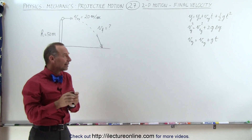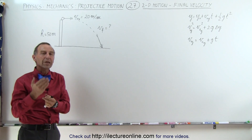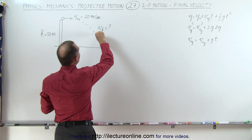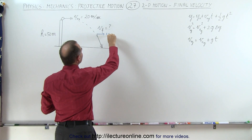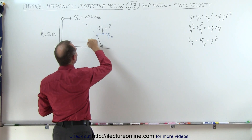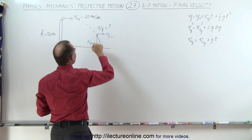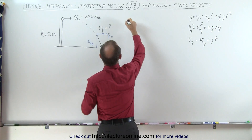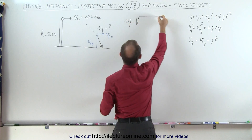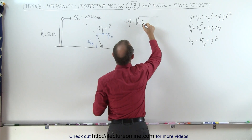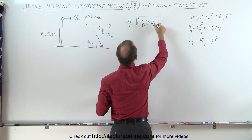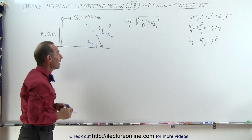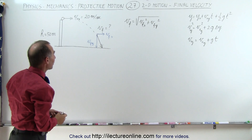The difficulty is that velocity is a vector quantity and has both an x and a y component. That means we need to find the final x component when it lands, v_final_x, and we need to find v_final_y. To find the magnitude of v_final, we use v_final = √(v_final_x² + v_final_y²) — the Pythagorean theorem applied to the hypotenuse of a right triangle.